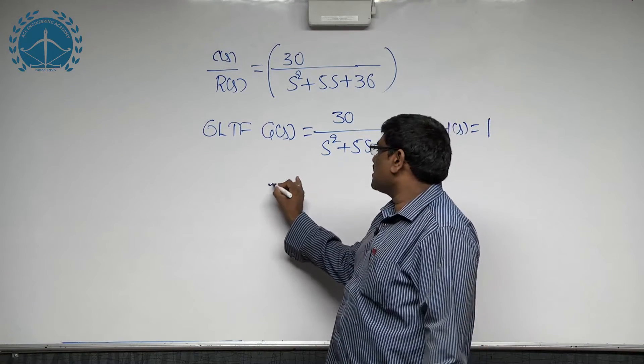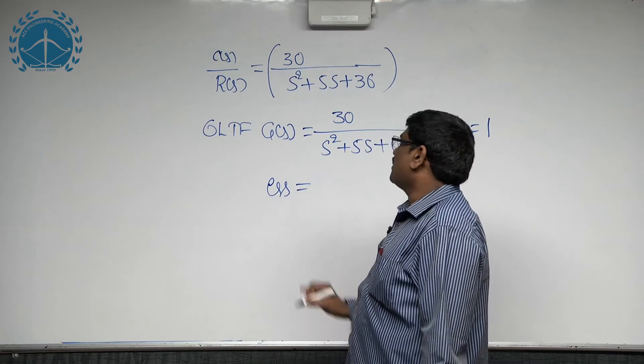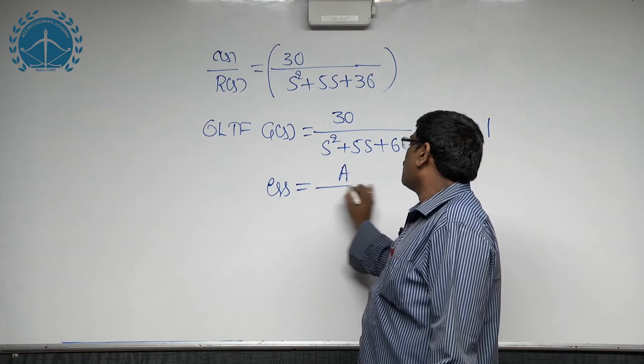The steady state error to the unit step input is A divided by 1 plus k.